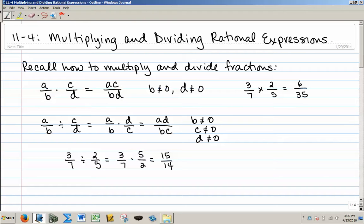Here's an example using real numbers. 3 sevenths times 2 fifths, multiply across the top to get a 6, across the bottom to get a 35, and the answer is 6 over 35.